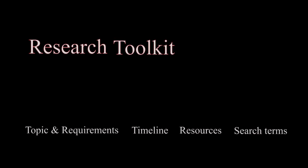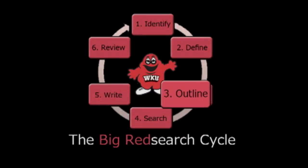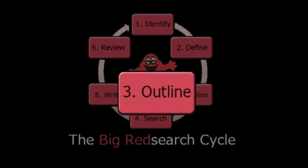Now you have a topic and requirements, a timeline, possible resources, and — more importantly — search terms that will help you find what you are looking for. You are ready for Step 3: Outline the major points and ideas for the topic and the basic resources from your research toolkit. Are you following an outline provided by your instructor, or are you creating one yourself? The outline gives you a framework that will make the next step more effective.